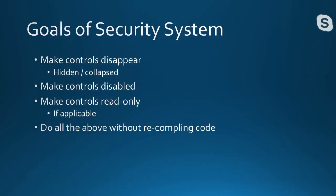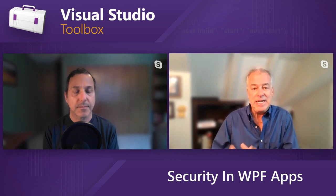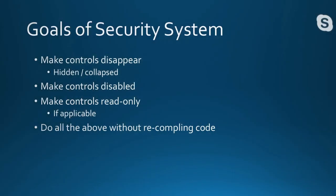It's important to start with the goals of why you need a security system. The major goals are: make controls disappear — hide them or collapse them; make some controls disabled; make some read-only. And the major goal we're building toward is to do all of this without having to recompile code.